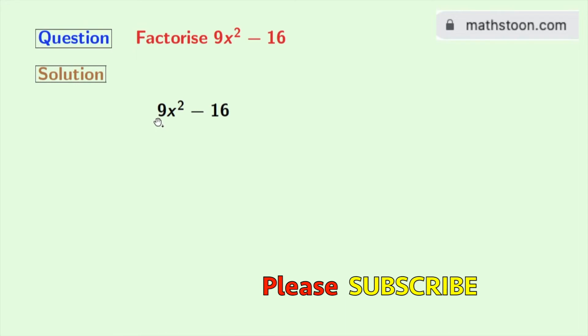This is our given expression 9x square minus 16. We will express each of these terms as a square of something. Doing so, we get 3x whole square minus 4 whole square.